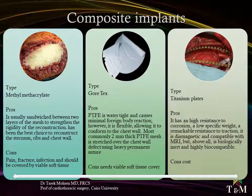Methyl methacrylate is used sandwiched between two layers of mesh to strengthen the rigidity of the reconstruction. It has been the best choice to reconstruct the sternum, ribs, and chest wall; however, complications include pain, fractures, and infection, and it should be covered by viable soft tissue. Gore-Tex is watertight and causes minimal foreign body reaction; however, it is flexible. It is most commonly used as two-millimeter thick meshes stretched over the chest wall defect using heavy permanent sutures, and in all cases viable soft tissue cover is needed.